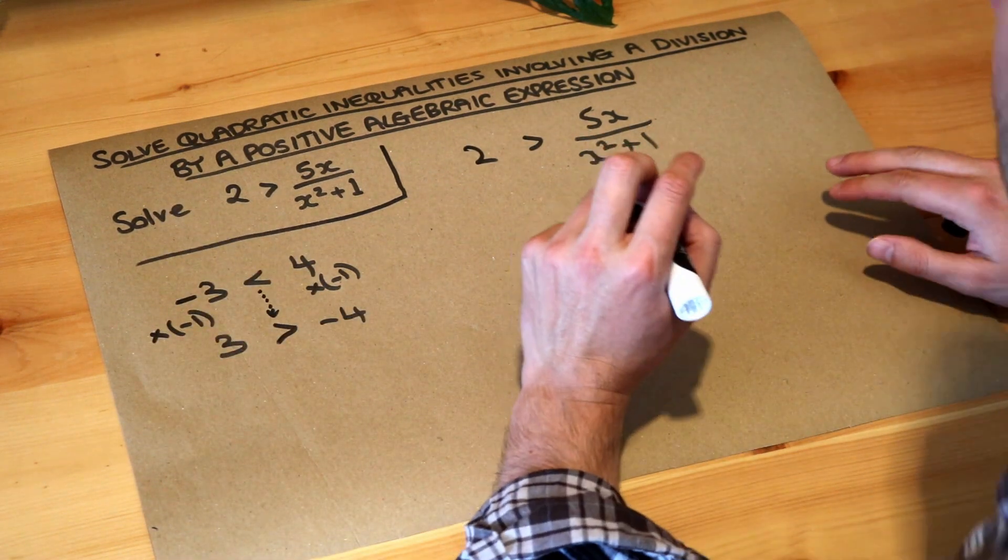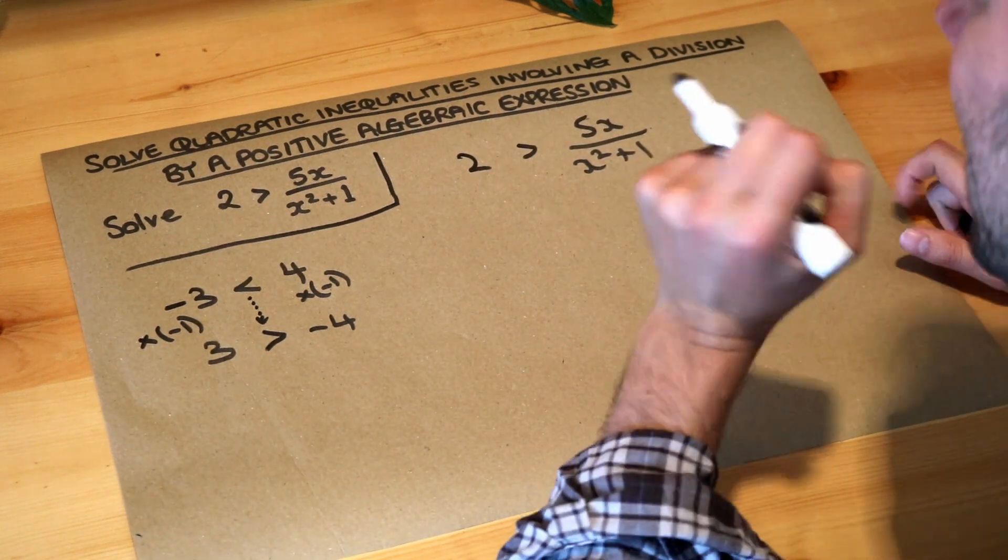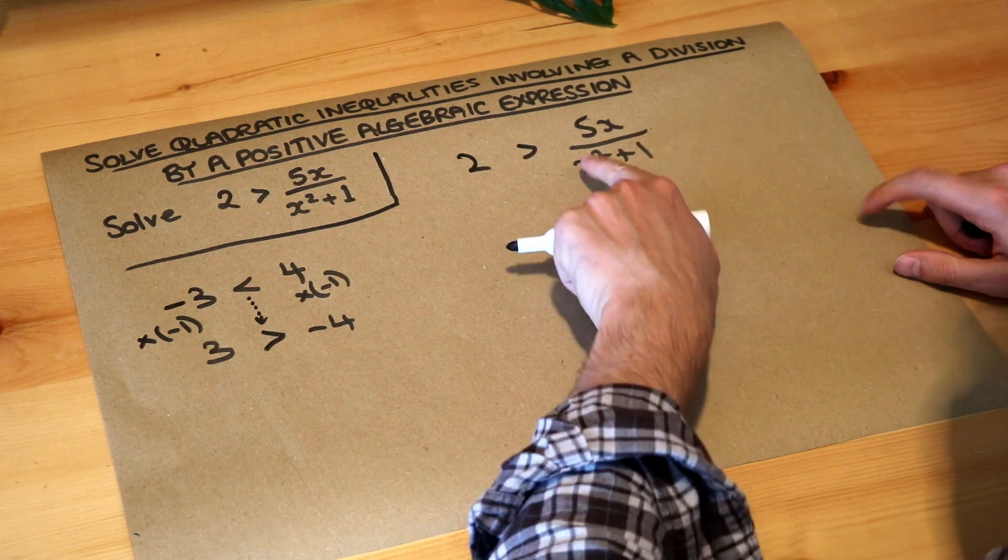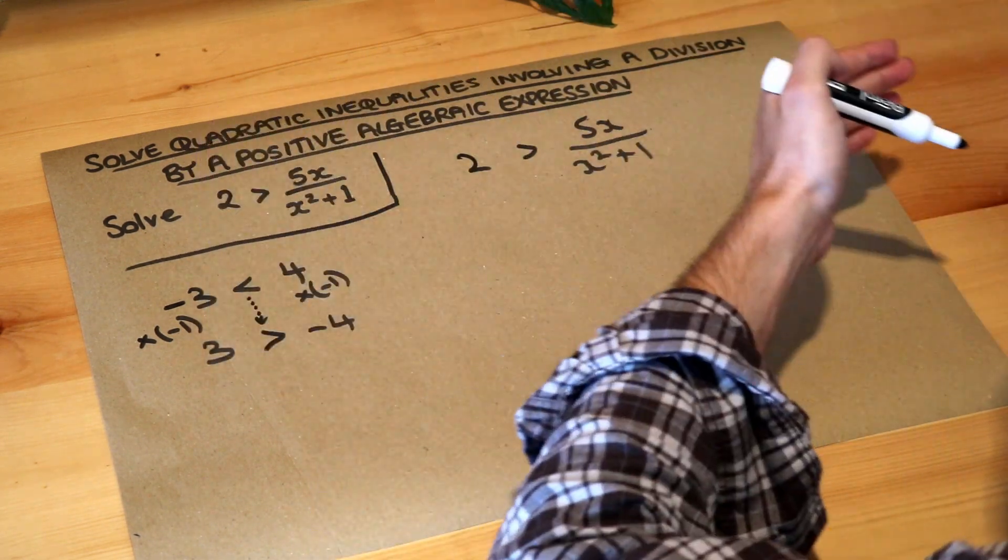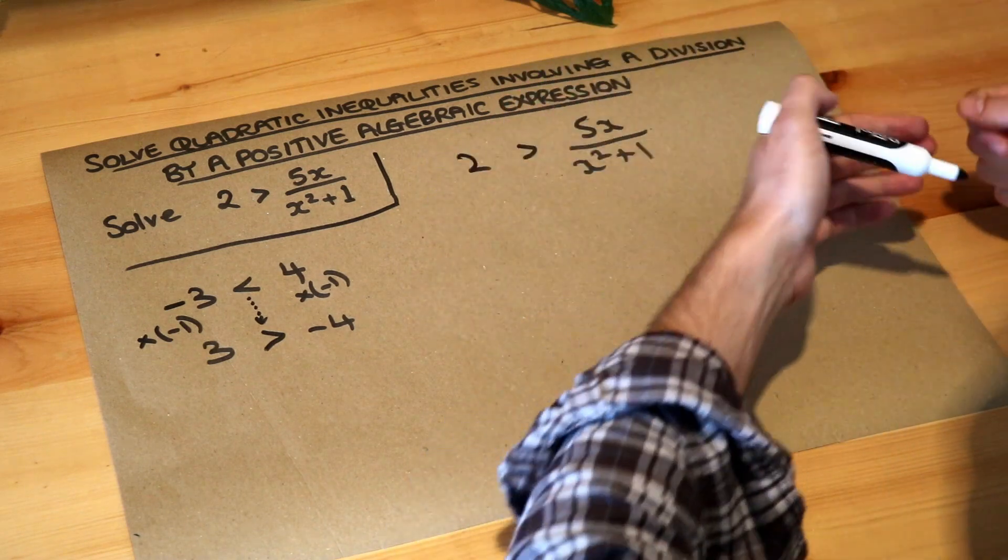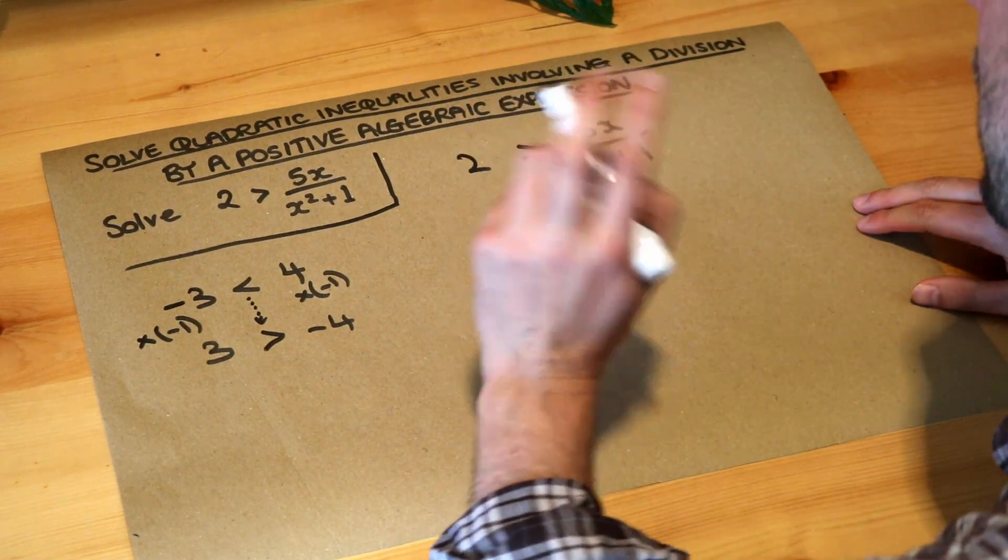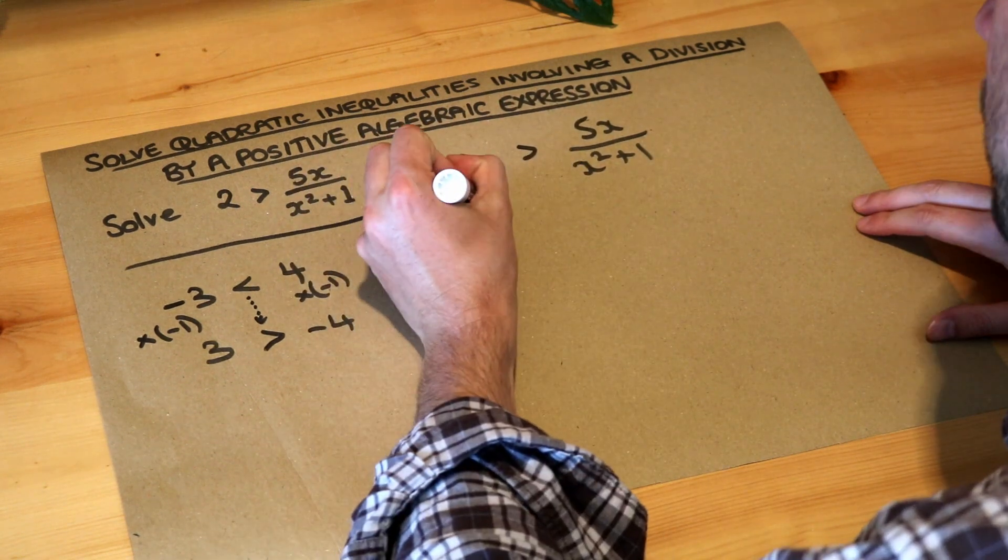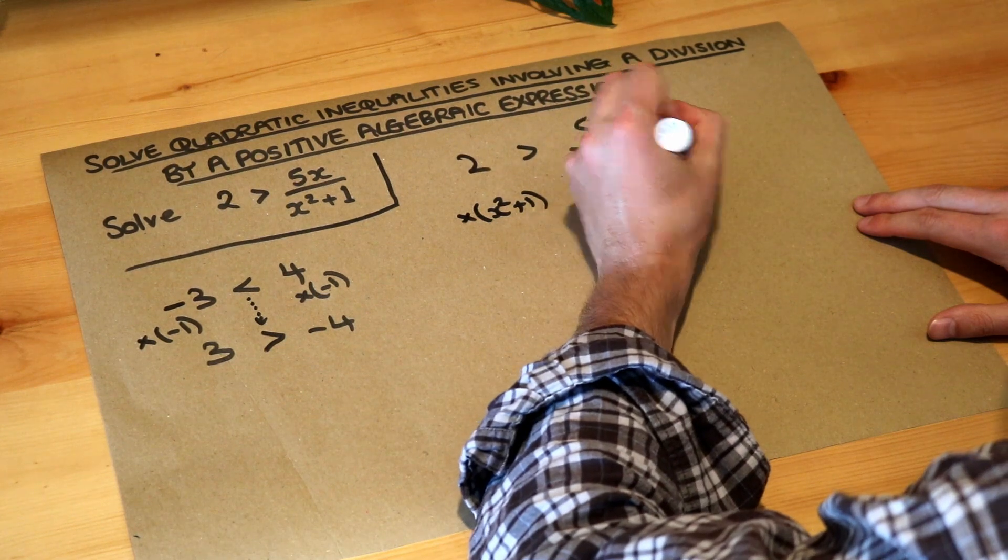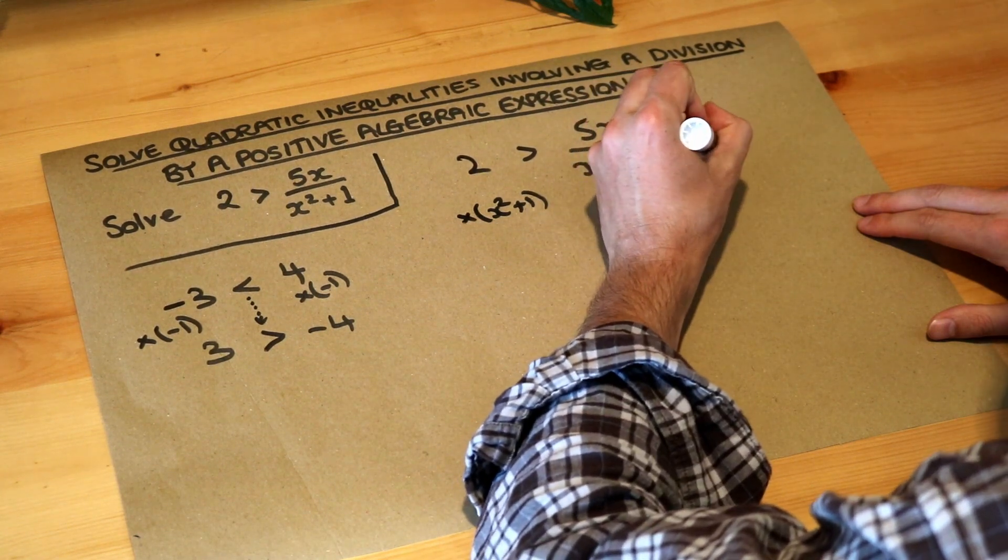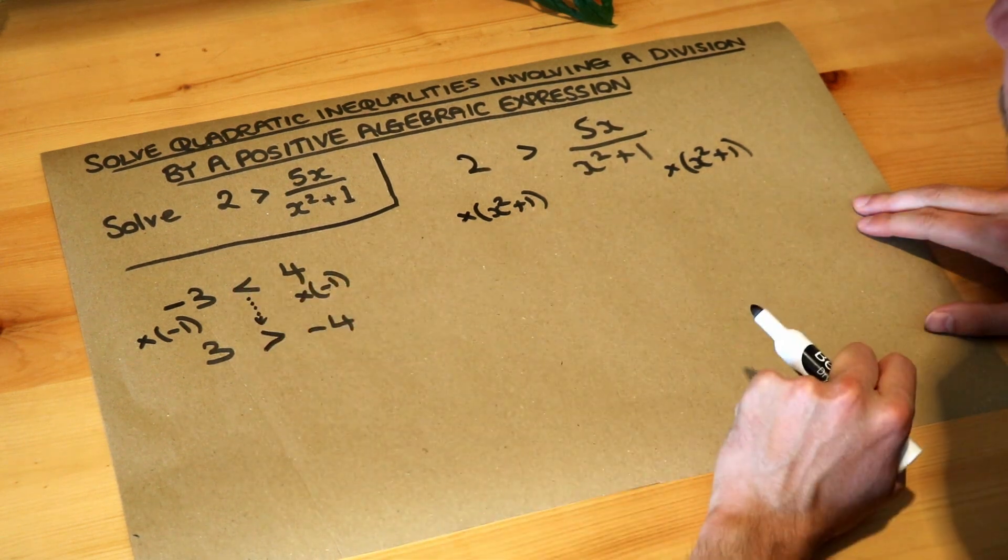Now that's not going to be a problem here and the reason we know that is because x squared plus one we can guarantee is positive because anything squared is going to be positive. If you have a negative number squared it becomes positive. If you have a positive number squared it becomes positive. Zero squared is zero. It's always going to be positive and that means we can safely multiply both sides of the inequality by x squared plus one and not worry about the direction of that inequality changing like it has done here.